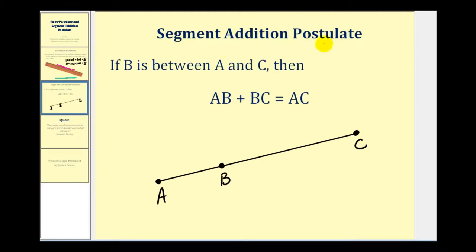The segment addition postulate tells us that if we have the segment AC and the point B is between point A and point C, then the length of AB plus the length of BC must equal the length of AC. So the distance from A to B added to the distance from B to C would give us the total length from point A to point C.